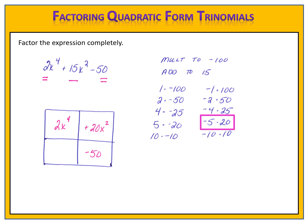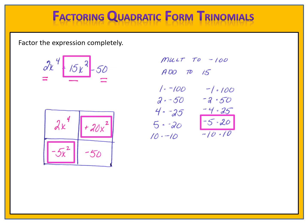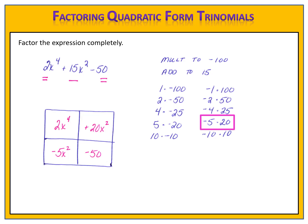I'm going to put a plus 20x squared in one box and a minus 5x squared in the other. Notice that the middle term in the trinomial has x squared as its variable and exponent. These two variables in the grid must match that middle term. So since I had a 15x squared, I will put a 20x squared and a minus 5x squared. Now it's business as usual.